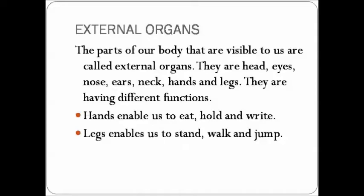What are the parts you can see? You can see our head, eye, nose, hand, legs, ears, neck. These are the parts we are able to see — these are our external organs. All these parts have different functions. We use our hands to write, hold things, to eat, to clap, etc. We use our legs to stand, to walk, to jump, to kick, to play, etc.